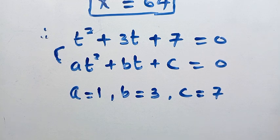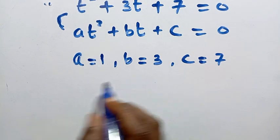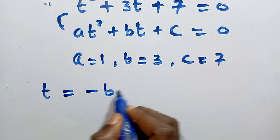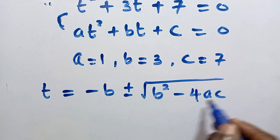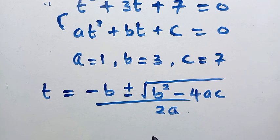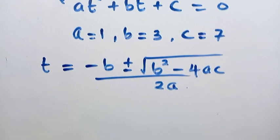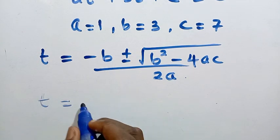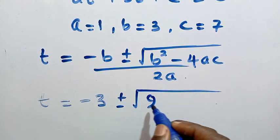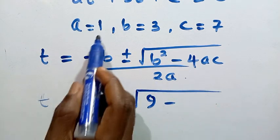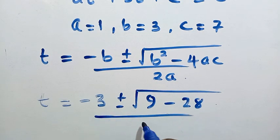Substituting into the quadratic formula: t equals minus b plus or minus the square root of b squared minus 4ac, all divided by 2a. This gives t equals minus 3 plus or minus the square root of 9 minus 4 times 1 times 7, over 2. That is minus 3 plus or minus the square root of 9 minus 28, over 2, giving the square root of minus 19 over 2.